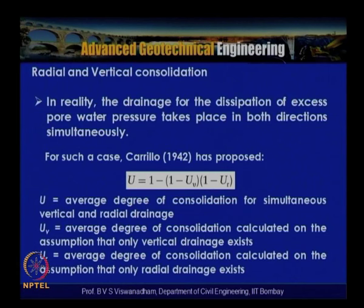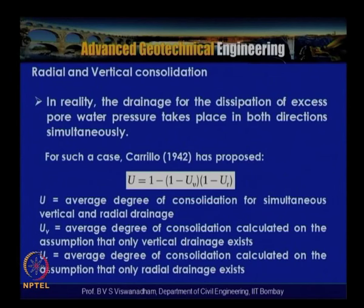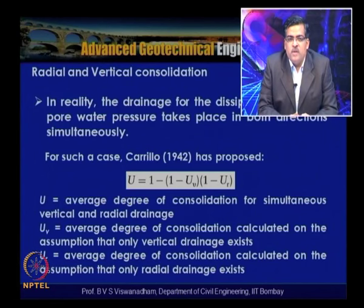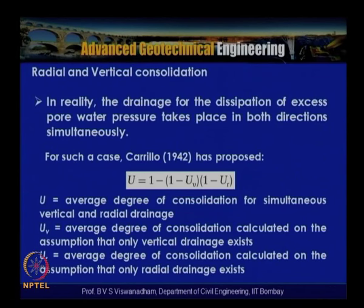In reality, drainage occurs both in the vertical and radial directions. Carrillo (1942) proposed the combined expression: U = 1 − (1 − Uv)(1 − Ur). After determining Ur from equal strain consolidation with or without smear, Uv is calculated by the conventional method, and then U = Uvr is the average degree of consolidation for both vertical and radial drainage.